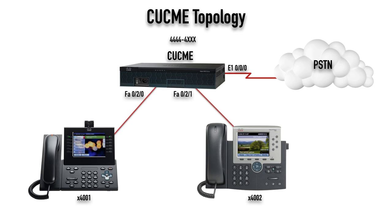Here's the demo topology: I've got a Communications Manager Express router with a couple of phones attached. Our mission is to configure the phone on the left - a Cisco 9971 with camera and video capabilities - to register with Communications Manager Express. We also want to configure the phone on the right - a 7965 Cisco IP phone. I'm going to do a SKINNY configuration for the 7965, and a SIP configuration for the 9971 since it only does SIP. We want these phones to register and call one another.